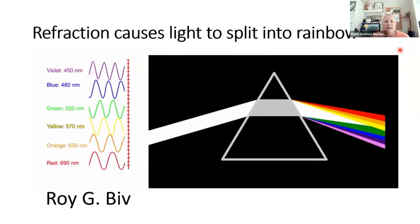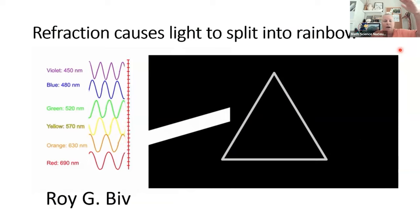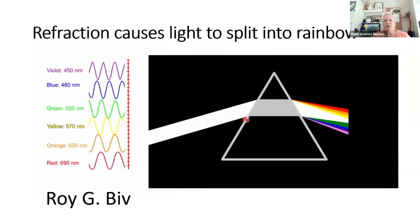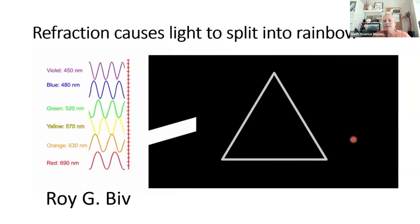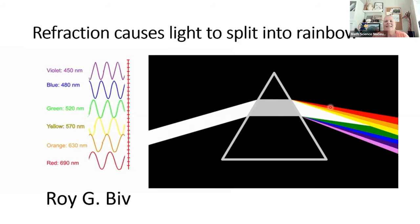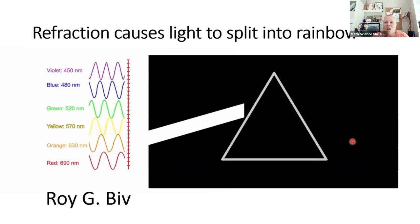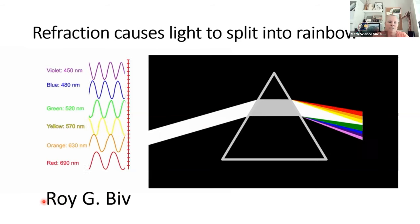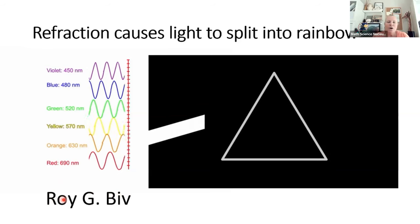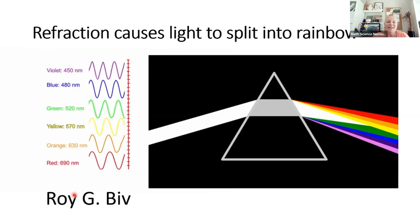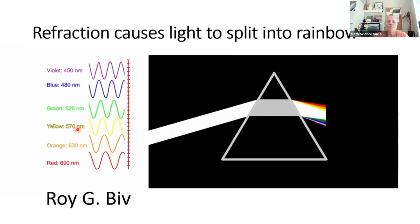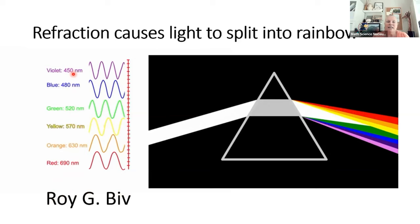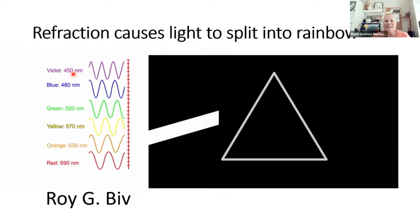Refraction causes light to split into rainbows. We see a lot of rainbows here when light travels through the air and hits different water molecules — it gets bent, just like going through a prism. White light can actually be broken down into all these different colors. All these colors go together and make white light. We remember these colors as ROYGBIV: red, orange, yellow, green, blue, and violet.